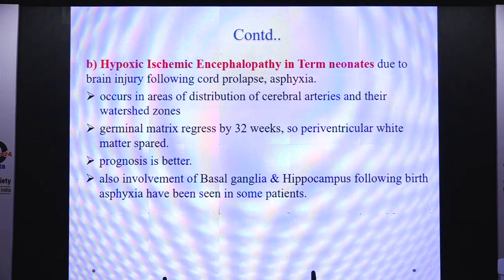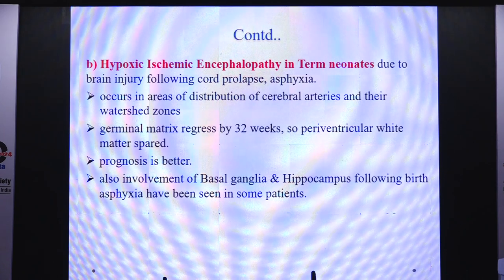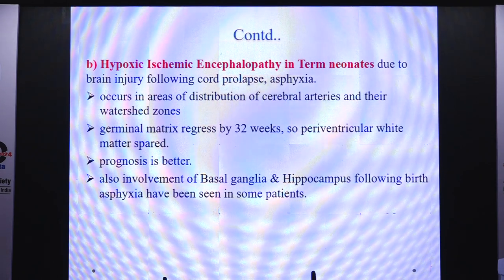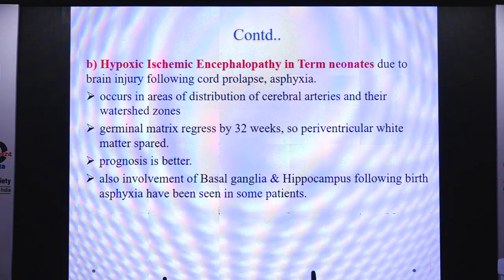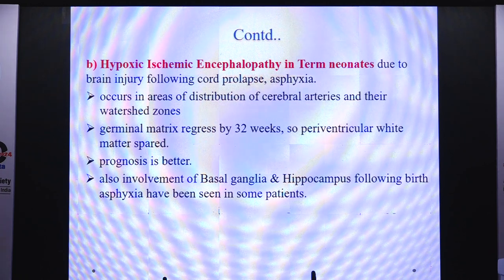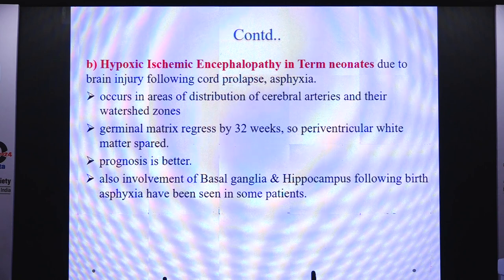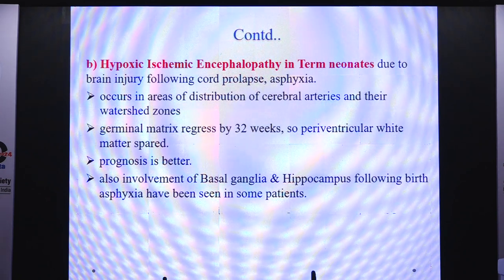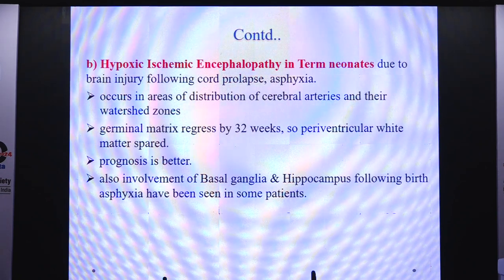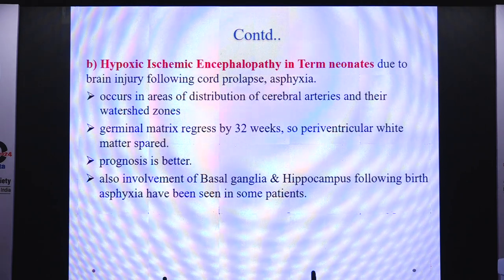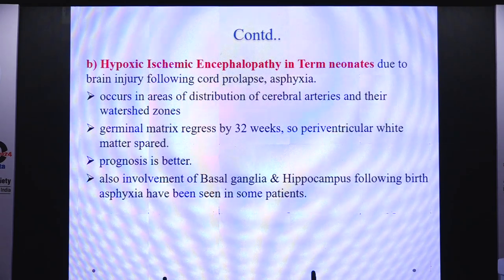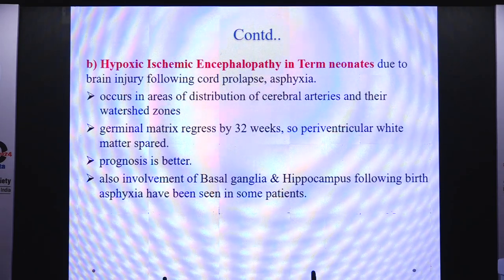Hypoxic ischemic encephalopathy in term infants happens due to brain injury following cord prolapse or asphyxia. It occurs in the areas of distribution of the cerebral arteries and their watershed zones. The germinal matrix regresses by 32 weeks, so periventricular white matter is spared in these cases. Prognosis is better. Involvement of the basal ganglia and hippocampus following birth asphyxia has also been seen in some patients.